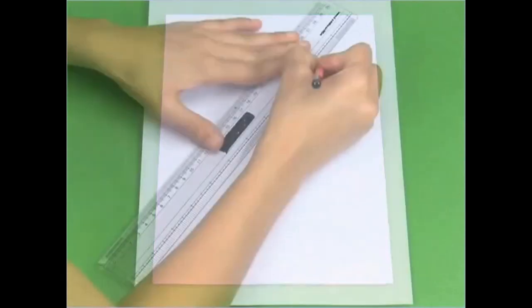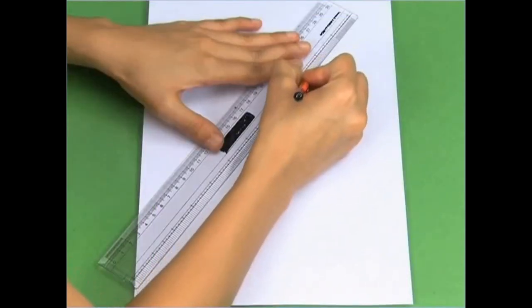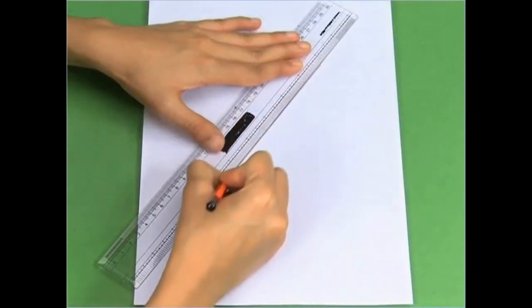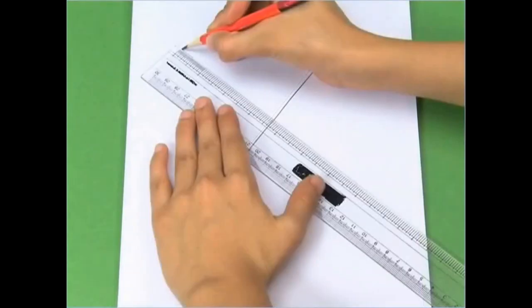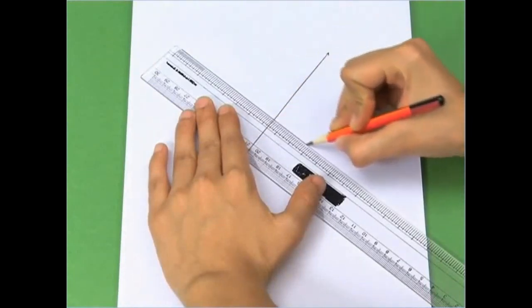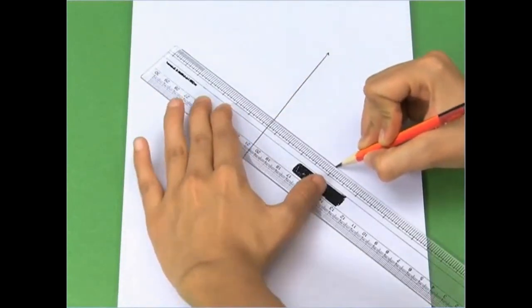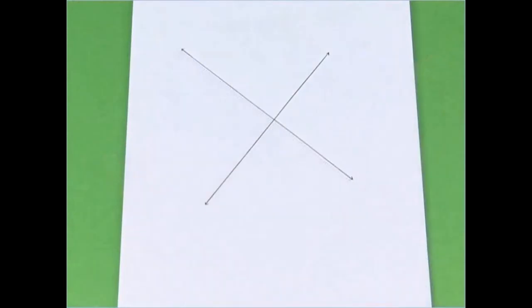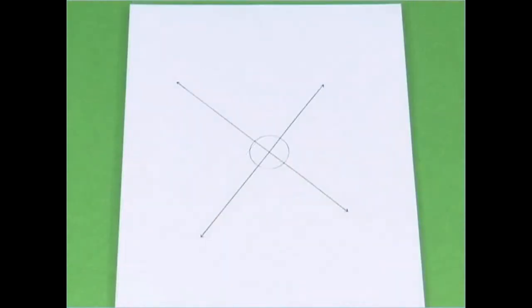On the sheet, draw two lines so that they intersect at a point. There are four angles formed between the two lines. Name the angles formed 1, 2, 3 and 4.